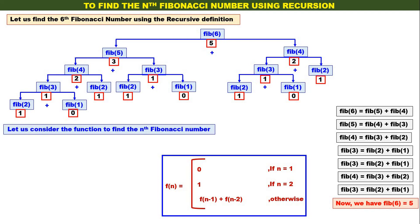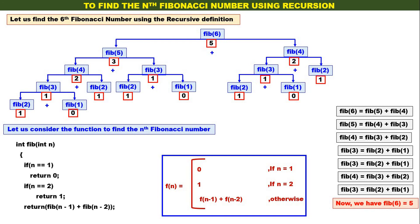Let us consider the function to find the nth Fibonacci number — very simple. The function Fib takes one parameter n. If n equals 1, return 0. If n equals 2, return 1. Else return Fib of n minus 1 plus Fib of n minus 2. That is the entire function. Recursive functions are always very small and concise, and the Fibonacci recursive function is no exception. Finding the nth Fibonacci number using recursion is a simple concept and a simple function.